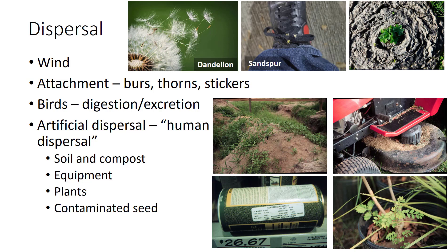A few methods of weed seed dispersal include windblown seeds like dandelions, animals or humans moving seeds with burrs, thorns, or stickers, transporting parts of plants to new locations, and birds that ingest weed seeds and then excrete them in different places. Humans also do a lot to aid in weed dispersal by moving soil or compost, moving weed seeds or plant parts with tillage equipment, planting non-native plants that become invasive weeds, and planting desirable plant seeds that are contaminated with weed seeds. In summary, it is important to correctly identify the weed species you target for control, understand their life cycles, and base your control strategies on all factors involved.